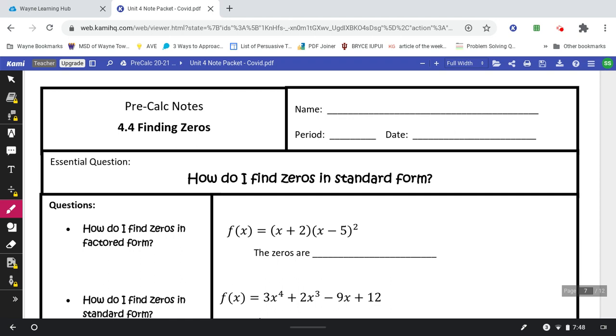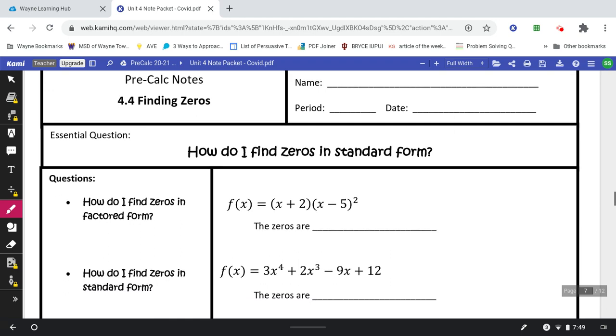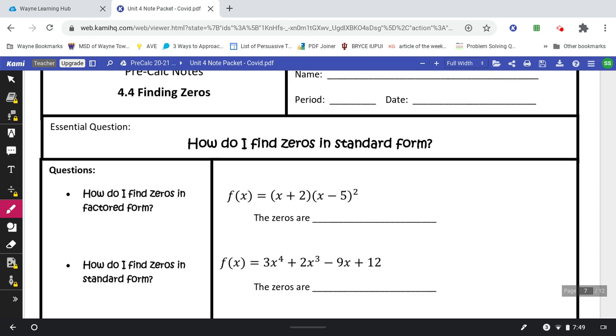These are the 4.4 notes. This is all about finding zeros. Remember, zeros is just another word for our answers. Our essential question: how do I find zeros in standard form? If you have it in factored form, something like x plus 2 and x minus 5, we automatically know that you're just going to change the signs to make it negative 2 and positive 5.